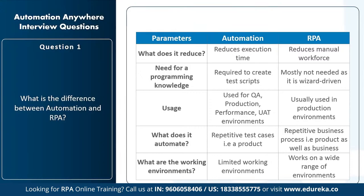On what it automates: automation automates repetitive test cases related to a product, while RPA automates repetitive business processes — products as well as business. On working environments: automation has limited working environments, while RPA supports a wide range of environments. So those are the main differences between automation and RPA.